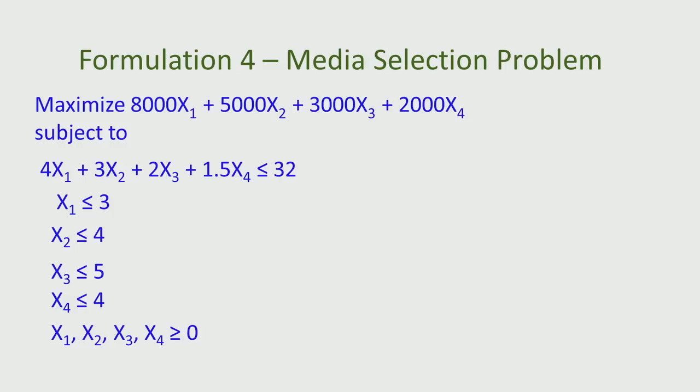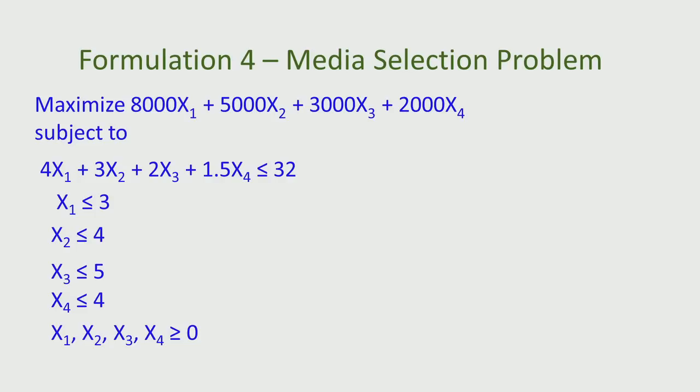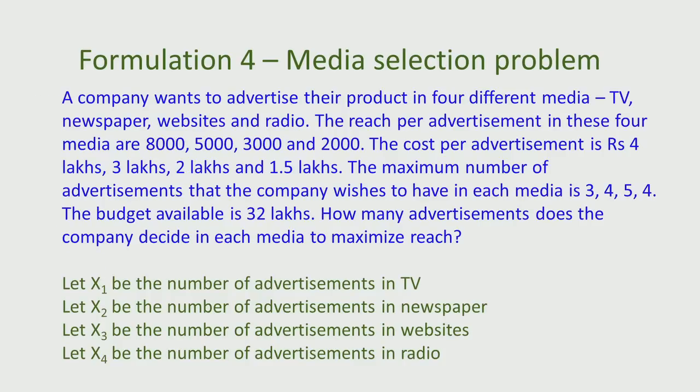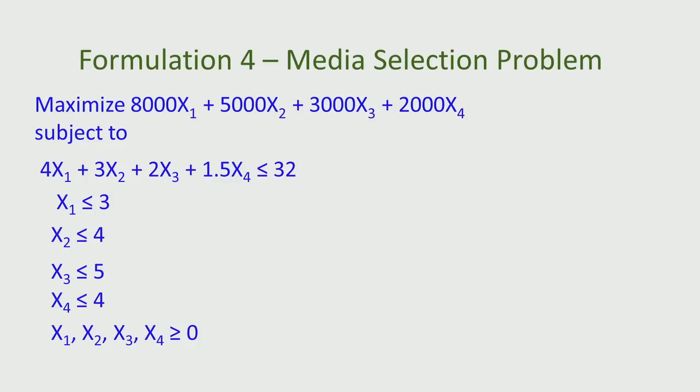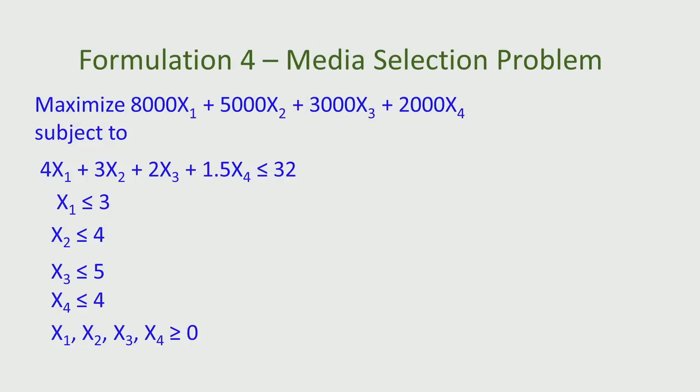We now write the objective function. The objective function is to maximize the total reach, which is the sum of the reach associated with each medium. If x1 advertisements go to TV then 8000·x1 is the reach. Similarly, 5000·x2 for newspaper, 3000·x3 for websites and 2000·x4 for radio. So we maximize 8000·x1 + 5000·x2 + 3000·x3 + 2000·x4.